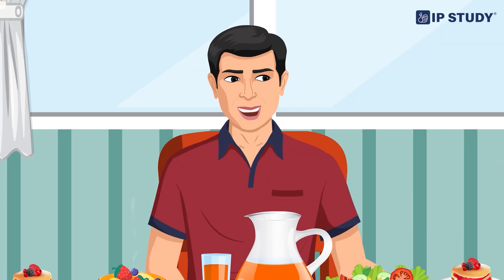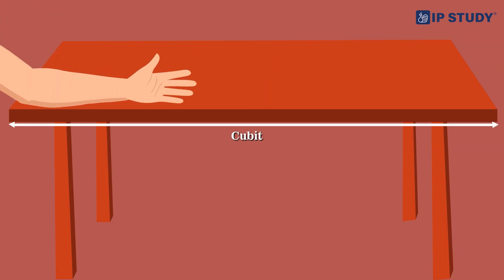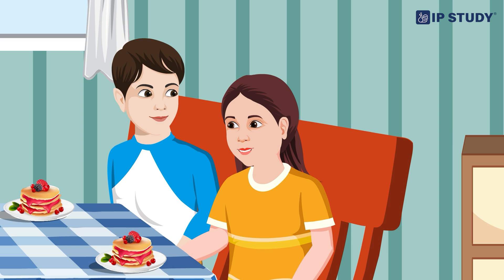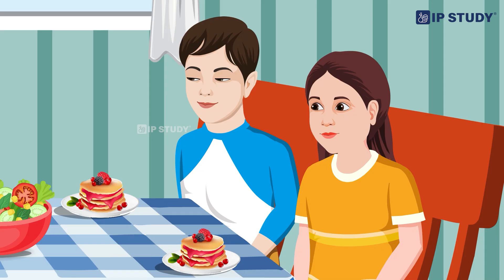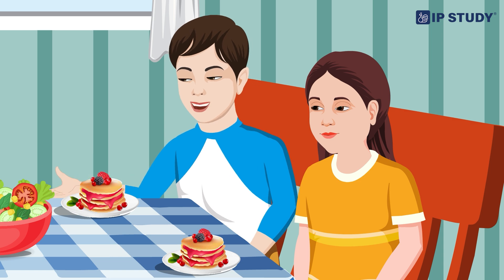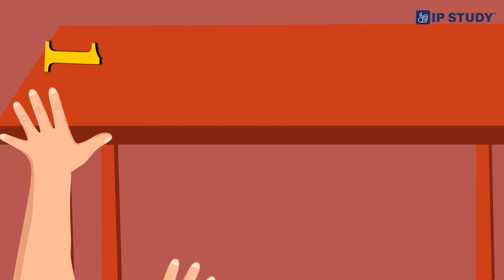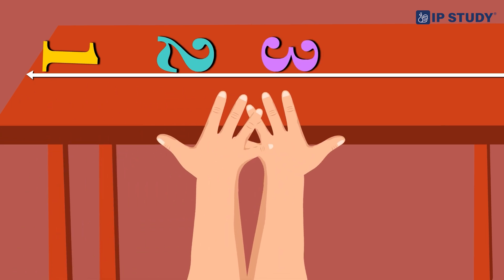You can do it with your cubit. Now place your cubit on the table and measure it from start to end. I want to measure my book with my hand. Place your hand like this and count the number of hand spans. See mom, my book is three hand spans long! Good, you are catching up Aman!